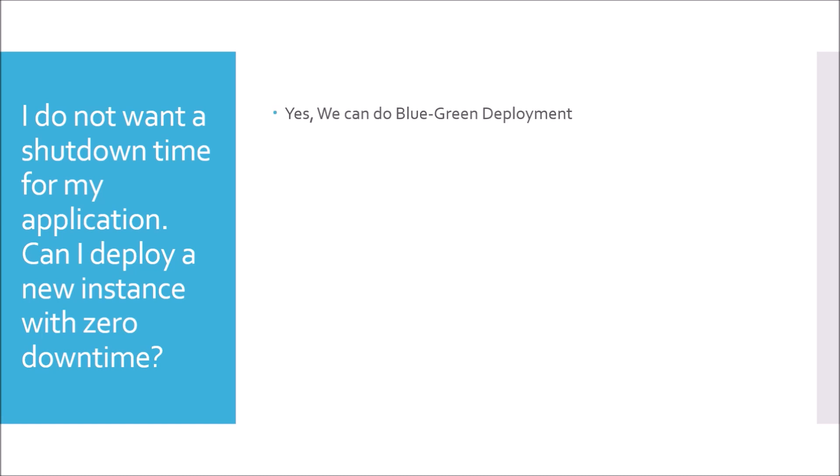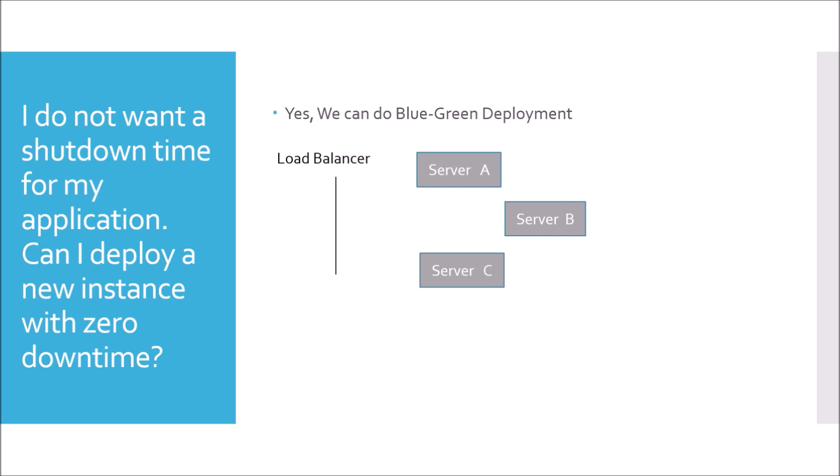To achieve zero downtime, we have a concept called blue-green deployment. Let's take an example of a middleware application where the input is a request (maybe XML or REST) and we are outputting something. Usually in production you would have three servers — A, B, and C — behind load balancers. If a request comes to the load balancer, depending upon the algorithm used, it will route to A, B, and C.